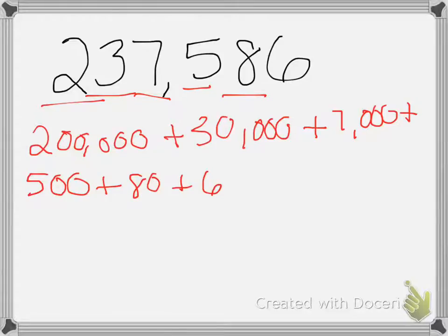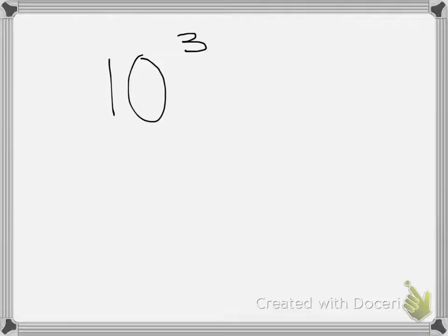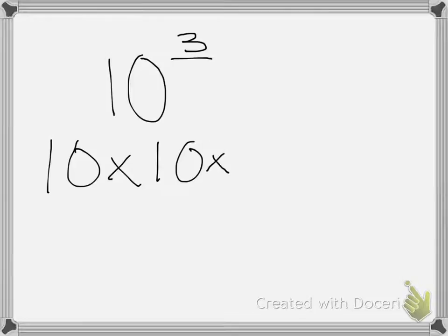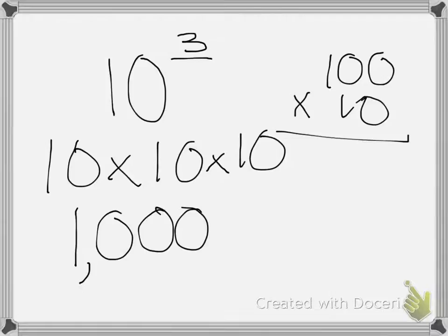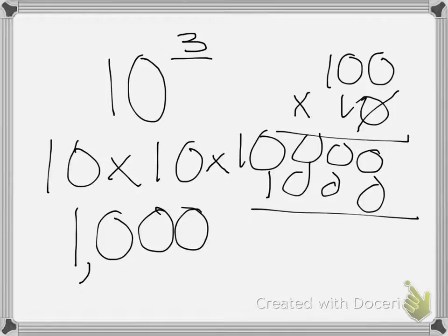We then looked at powers of 10 and exponents. So if we have 10 to the third power, that tells us we're either multiplying 10 three times — 10 times 10 times 10 — or it means 1 with three zeros. I can check my work: 10 times 10 is 100, times 10. Zero times anything is zero, then 1 times 1 is 1, giving me 1,000.